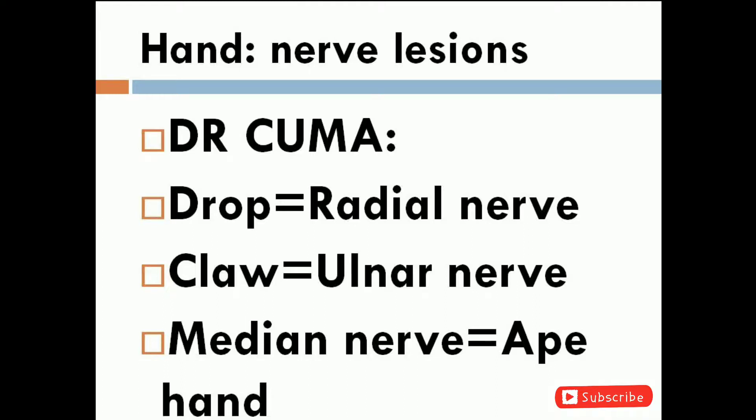R for radial nerve. C for claw. U for ulnar nerve. M for median nerve. And A for hand.